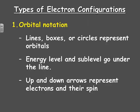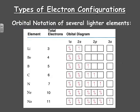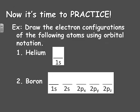We need to practice doing orbital notation. In this notation, lines, boxes, or circles represent the orbitals. The energy level and sublevel go under the line, and up and down arrows represent electrons and their spins. Here are the orbital notations for several lighter elements. Let's start with helium: it has two electrons, so I put two electrons at the 1S sublevel — one up arrow, one down arrow — and it's done.